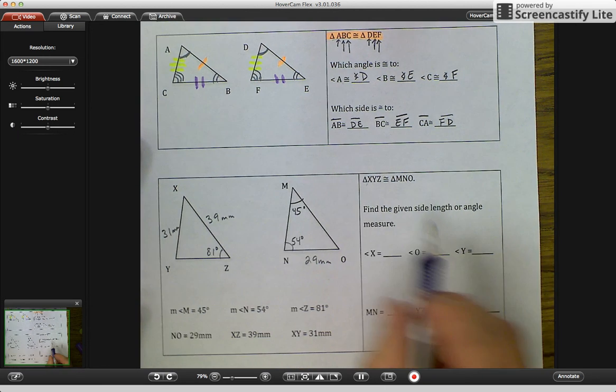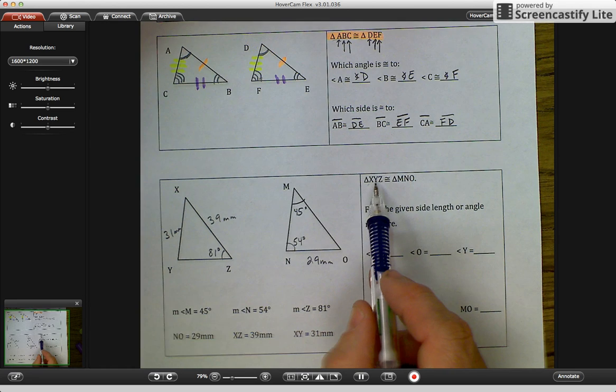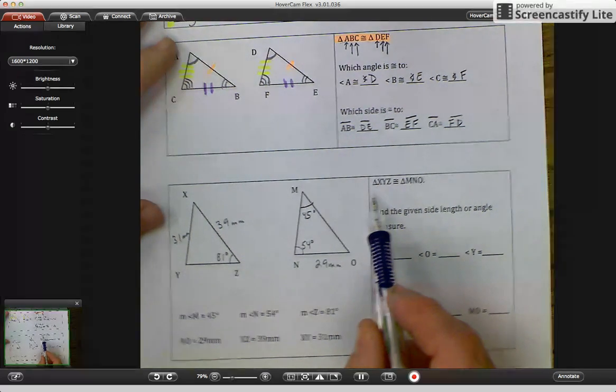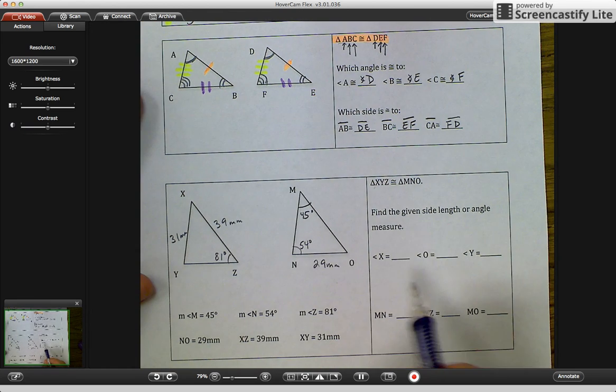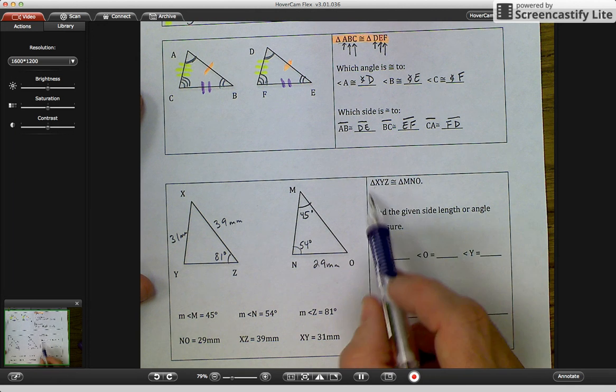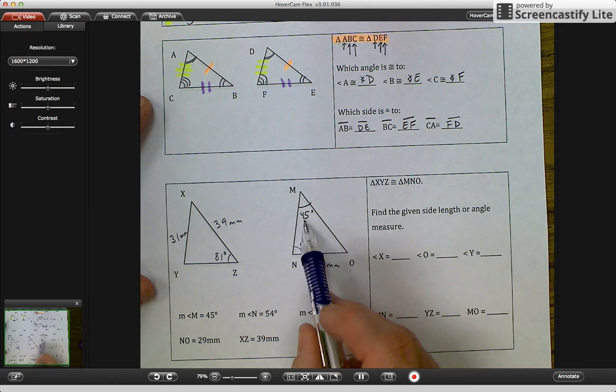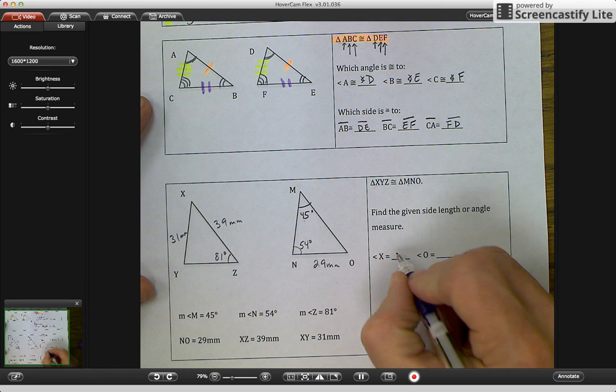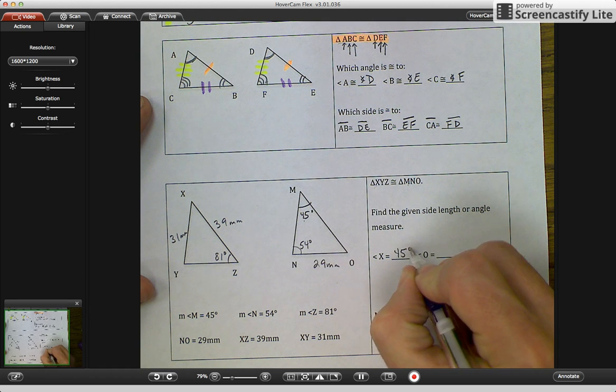As we look at our triangle statement, congruent statement up here, I see that angle X is congruent with angle M. Angle M is 45 degrees, so X is 45 degrees.